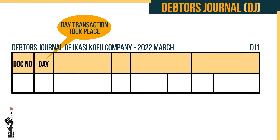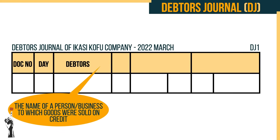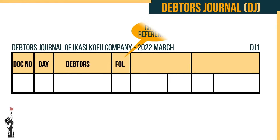Thirdly, the debtors column is used to write the name of a person or business to which the goods were sold on credit — as we already know, this person or business is called the debtor. Fourthly, the folio column is for the folio number and is used for cross-reference.